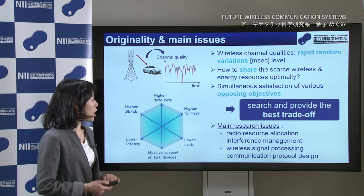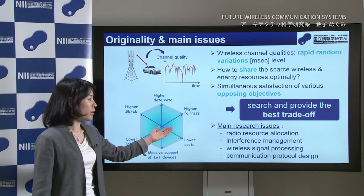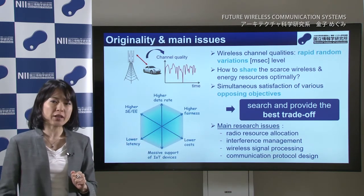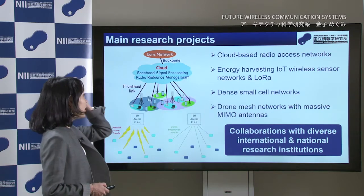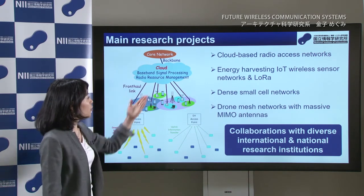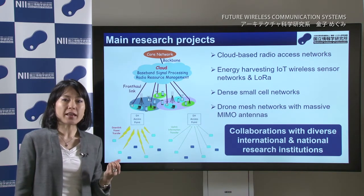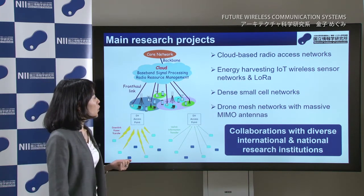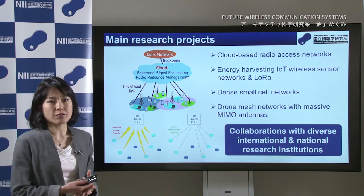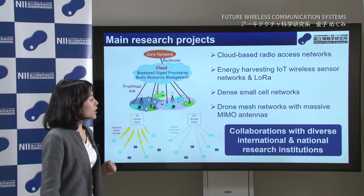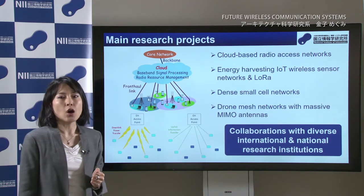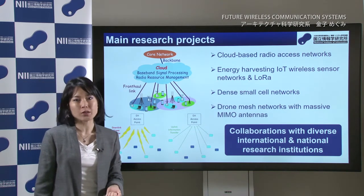I mainly focus on the design of radio resource allocation and interference management strategies, but also wireless signal processing and the design of new communication protocols. Here is a list of my main research projects. For example, I work on the design of cloud-based radio access networks, which are one of the main candidates for 5G networks, and also on IoT wireless sensor networks, which can harvest the energy from their own environment. All these projects are made under collaboration with diverse international and national research colleagues, which is also one of the aspects that I enjoy the most in doing research.